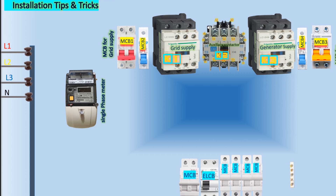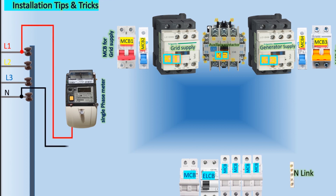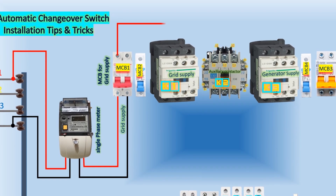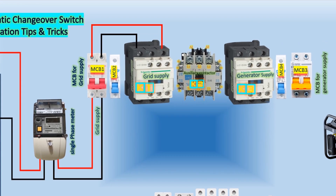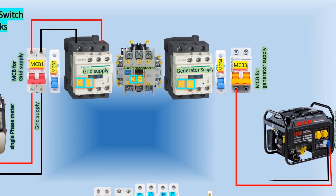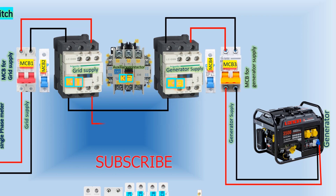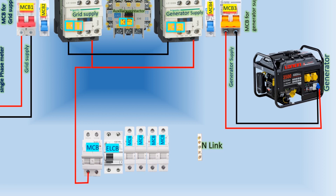In the power circuit of this changeover, the main grid's 220-volt supply is connected to the energy meter. The output of the energy meter is then directed to the two-pole MCB1, which further connects to the L1 and L3 terminals of contactor K1. Similarly, the phase and neutral wires from the generator are connected to the two-pole MCB2, and the output wire of this MCB is linked to the L1 and L3 terminals of contactor K3. Notably, the output terminals of contactors K1 and K3 are looped, connecting T1 to T1 and T2 to T2. The phase and neutral wires from the output of the K1 contactor are directed to the two-pole MCB of the distribution board. The output of this MCB is then connected to the ELCB, Earth Leakage Circuit Breaker.